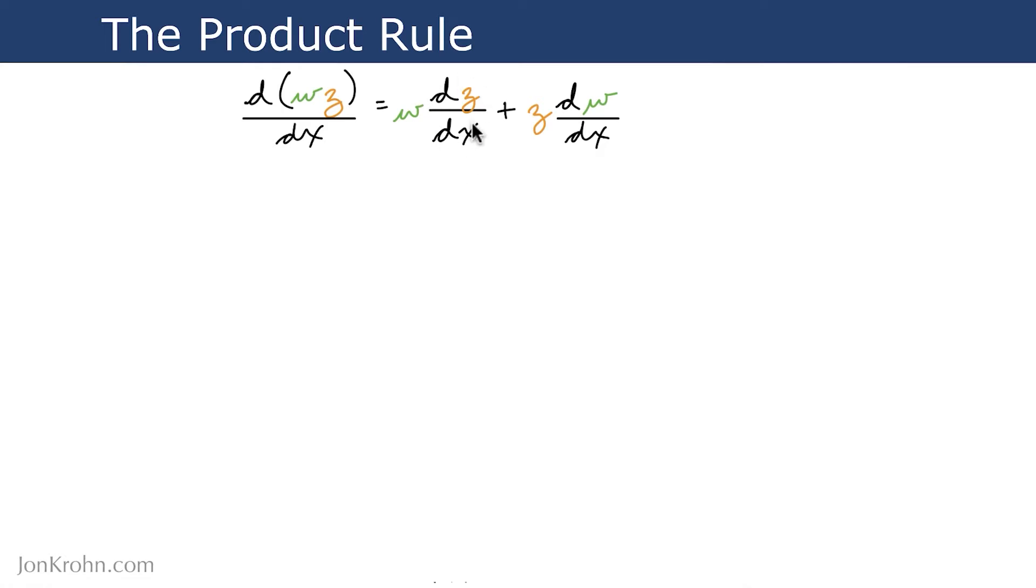In one of the terms, we take w and multiply that by the derivative of z with respect to x. In the other term, we simply do the opposite. We take plain old z and multiply it by dw/dx.